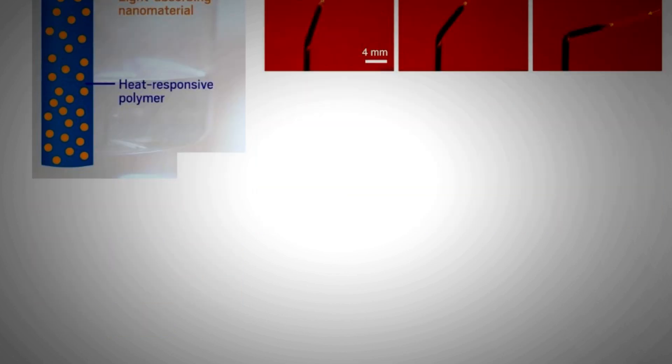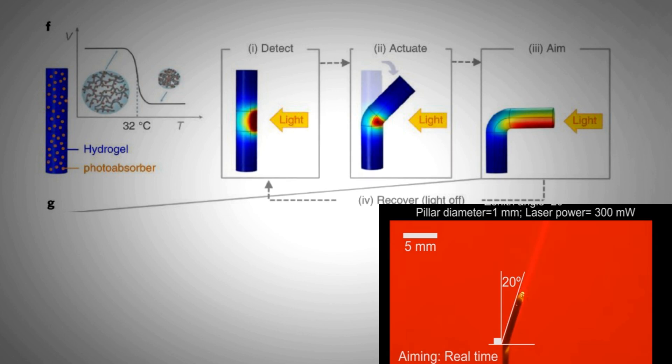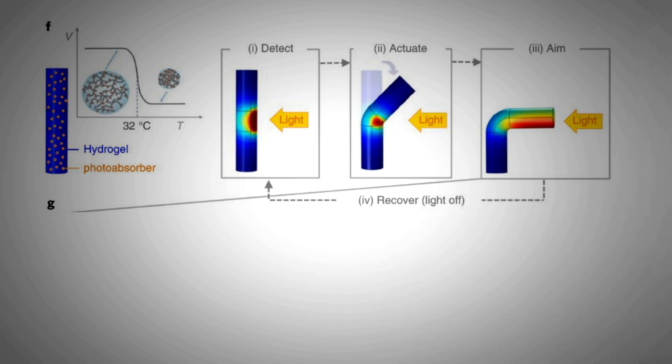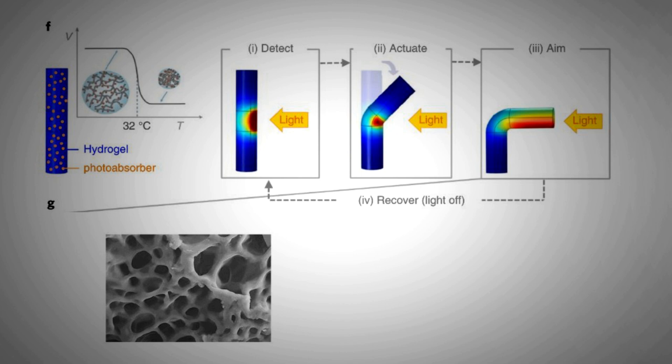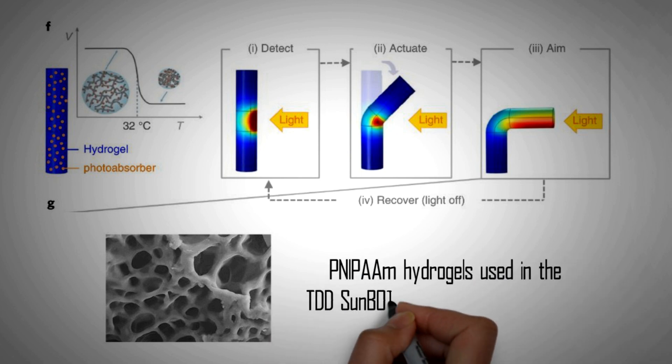When a part of the SunBOT pillar facing the light gets illuminated it heats up. A difference of temperature is created between the shaded side of the pillar and the illuminated part. This temperature difference results in the shortening of the pillar on the illuminated side.